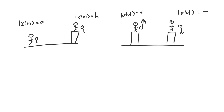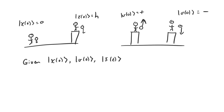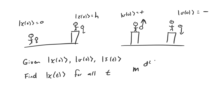So more explicitly, the problem we solve in classical mechanics looks like this: we're given some initial position, some initial velocity, and the force that acts on the system as a function of time, and we want to find the position for all future times. We do this by solving Newton's second law type equations.